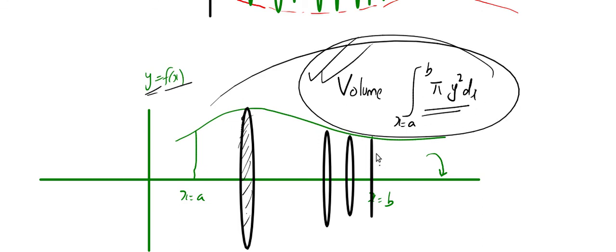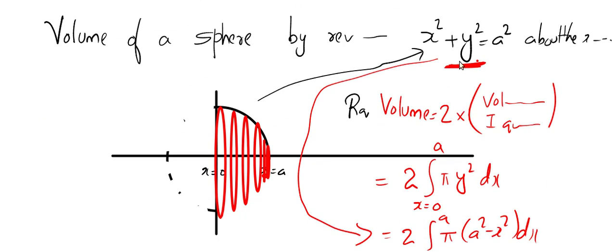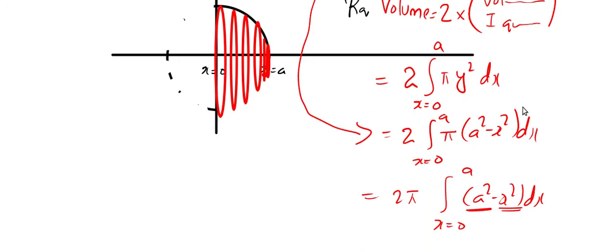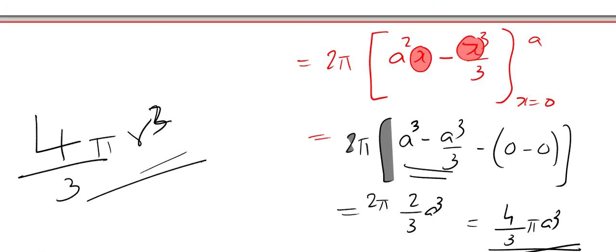The volume is given by a simple formula. Integral, the required part which we are planning to revolve, pi y square dx. And y square will be obtained from the equation. And we tried to find the volume of a sphere. And wow, it turned out to be exact. So I hope you enjoyed today's video. So please like, share and subscribe. I will be back with more videos. So till then my friends, bye.